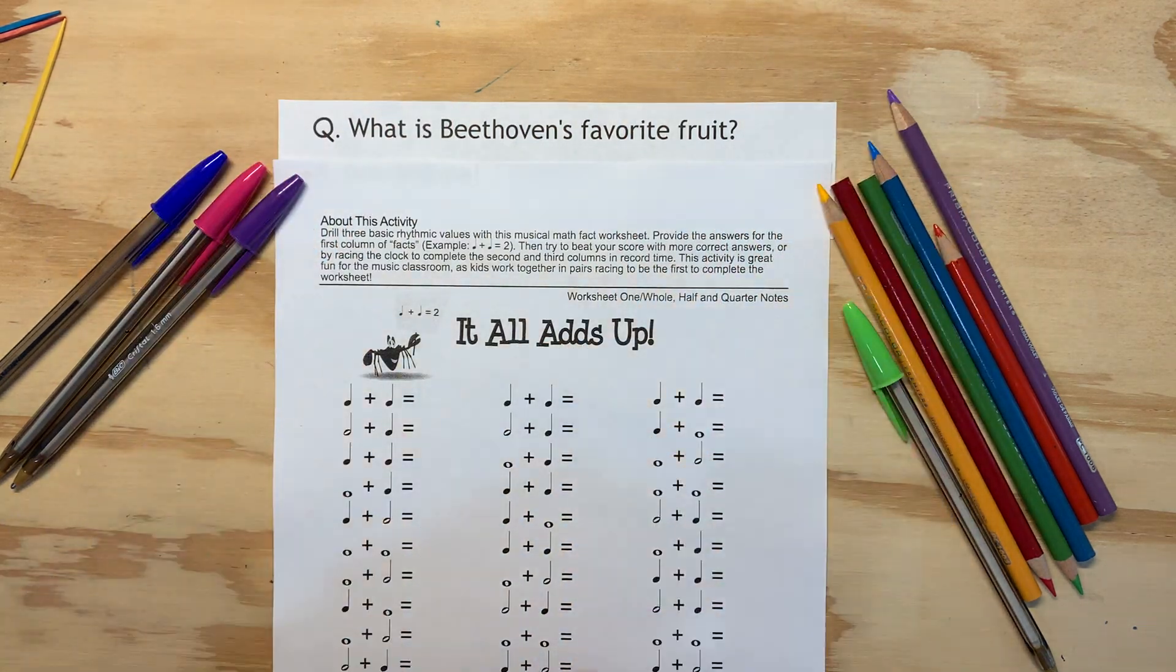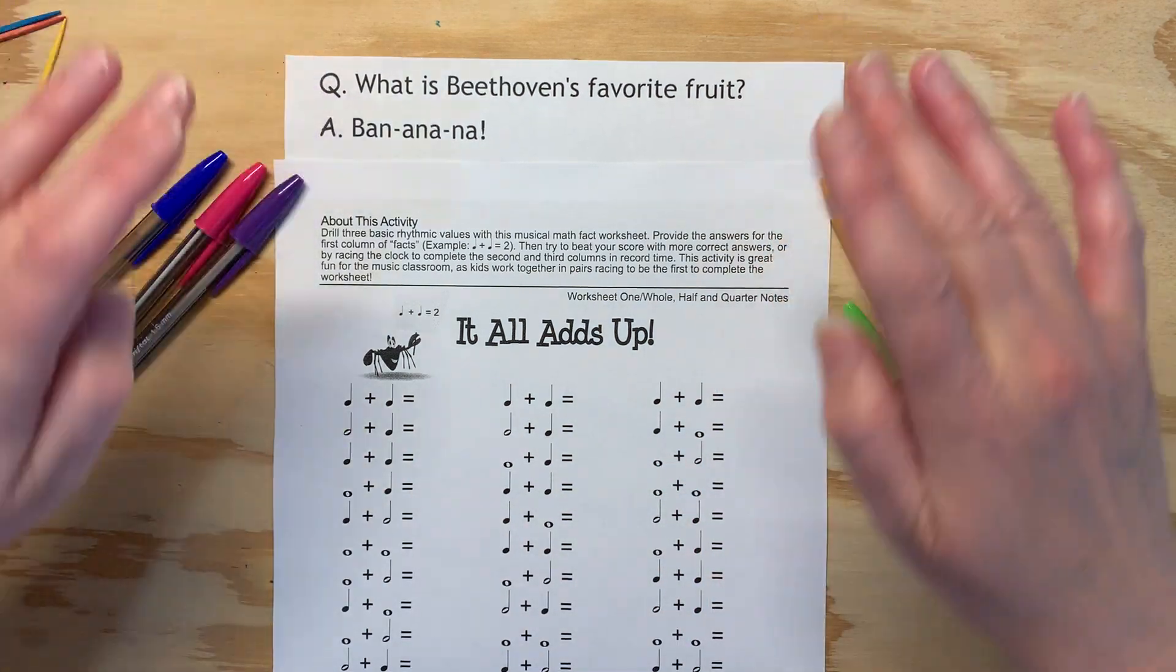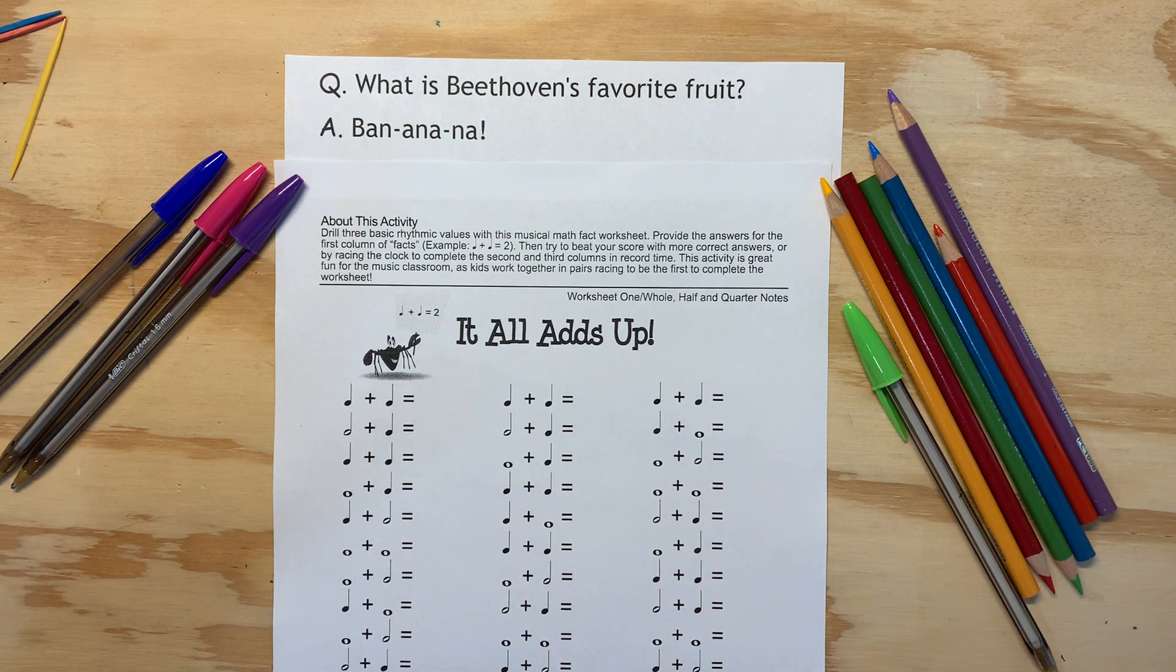But first, a joke. What is Beethoven's favorite fruit? What is Beethoven's favorite fruit? Ba-na-na-na, ba-na-na-na.